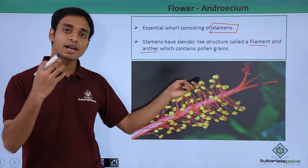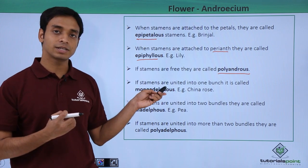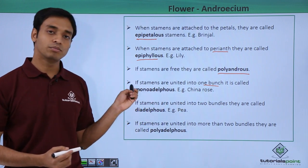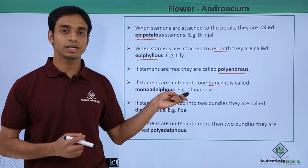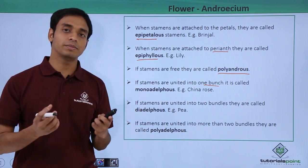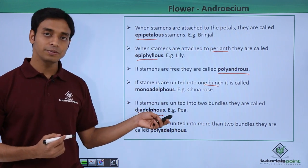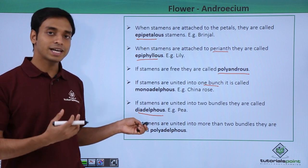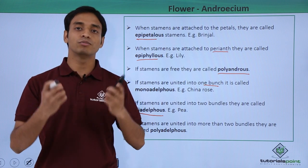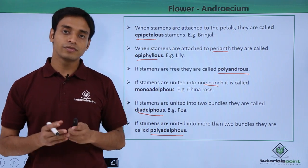When there are numerous stamens present in a flower, they can be grouped by how they are bundled. If all stamens are united into one single bunch, this is called monadelphous — commonly seen in China rose. If the stamens are divided into two different bunches, they are known as diadelphous — an example is pea. If the stamens are united into more than two bunches, they are known as polyadelphous.